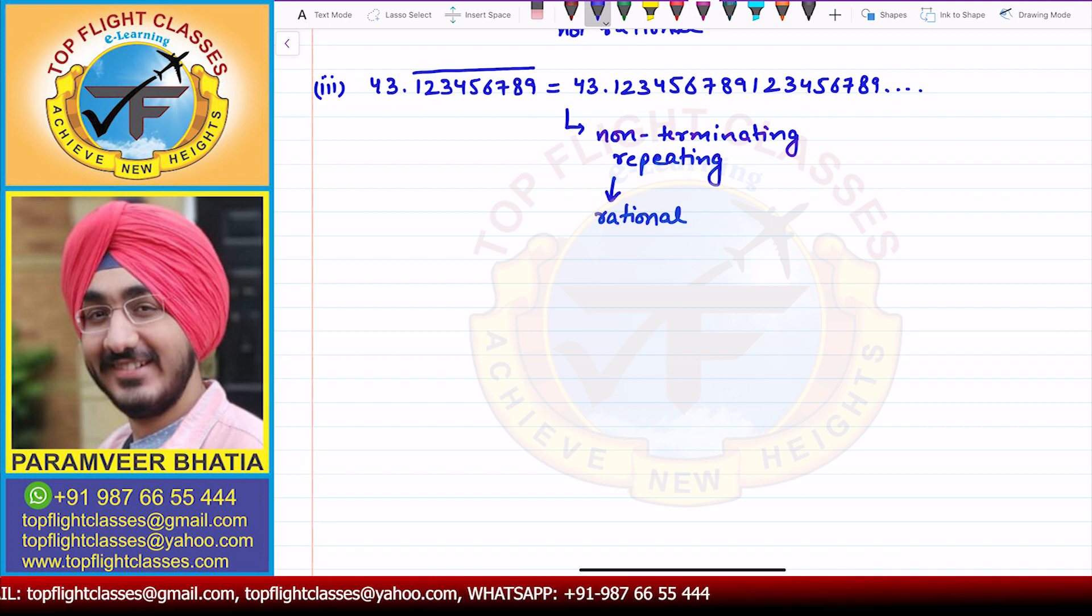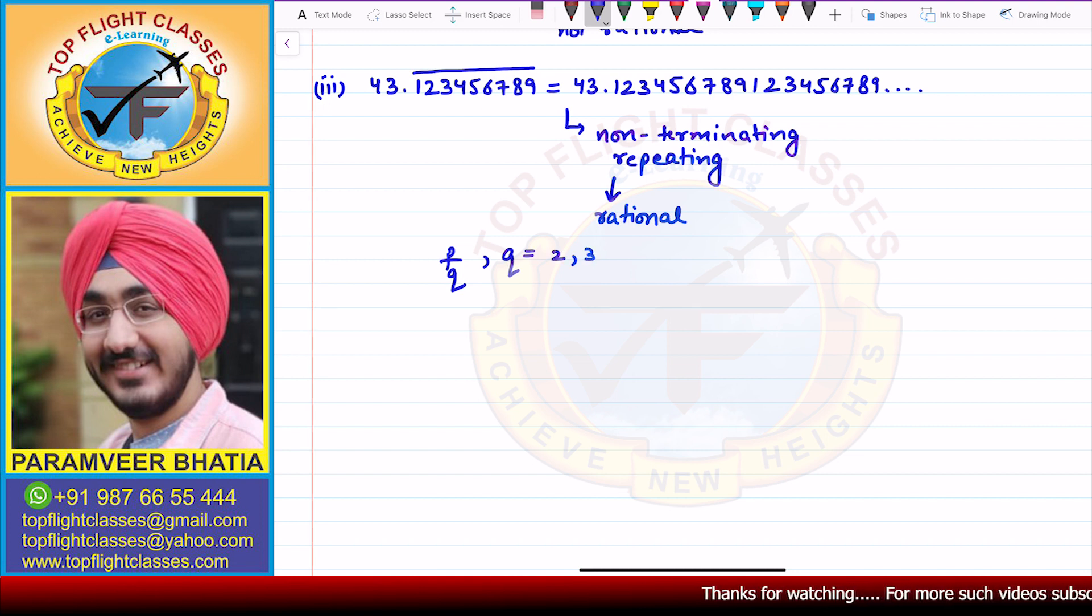Now we have a rational number here. So this rational number we can write in the form p by q. And when we write the prime factors of q, we have already discussed that when we have a non-terminating repeating case, the prime factors of the denominator q can be any prime number. It can be 2, or 3, or 7, or 5, or 11. That means not only 2 or 5, but other prime numbers will also be present. So any prime number can be present in the prime factorization of q. That is what is required in the question.